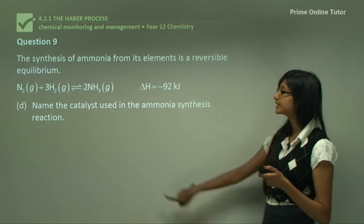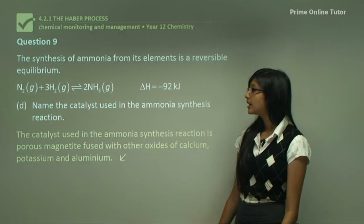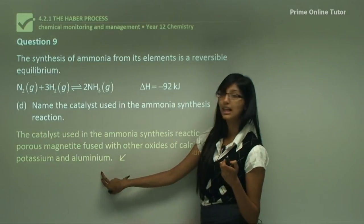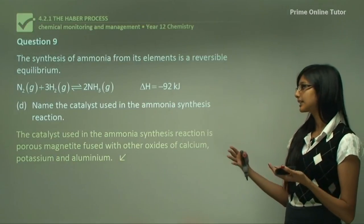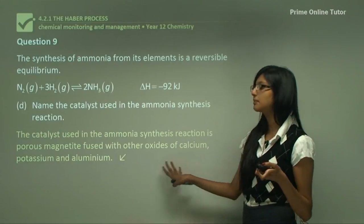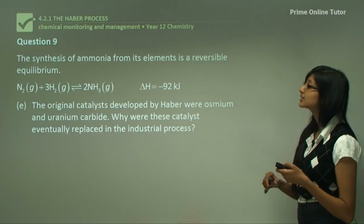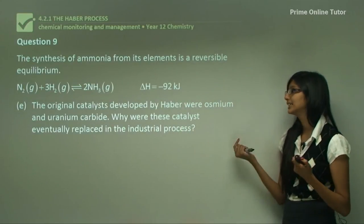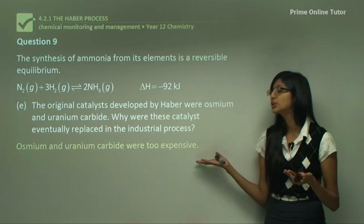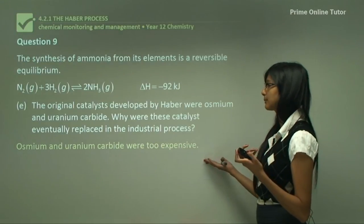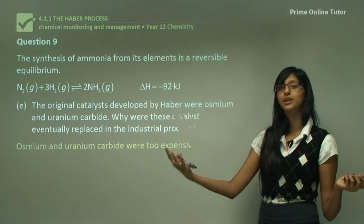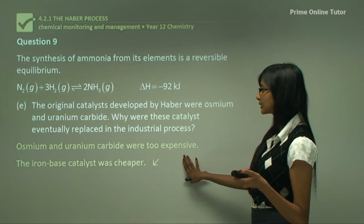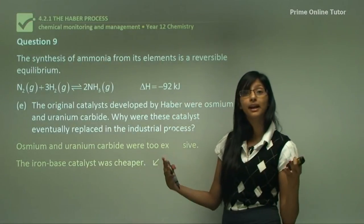Question 9d asks for the name of the catalyst used in the ammonia synthesis reaction. The catalyst is porous magnetite fused with other oxides of calcium, potassium, or aluminium. Question 9e notes that the original catalysts developed by Haber were osmium and uranium carbide. These were eventually replaced mainly because they were too expensive. Magnetite, an iron-based catalyst, is much less expensive than osmium and uranium while still producing the same yield of product.